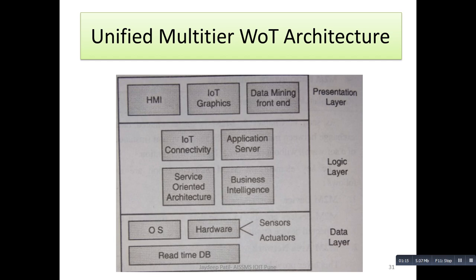This WoT architecture, which is a multi-tier architecture, is divided into three layers: the data layer, logic layer, and presentation layer. In the presentation layer we are dealing with graphical user interfaces and human-machine interfaces. In the logical layer we apply certain logics related to WoT, including IoT connectivity or web connectivity done with the help of the application server.